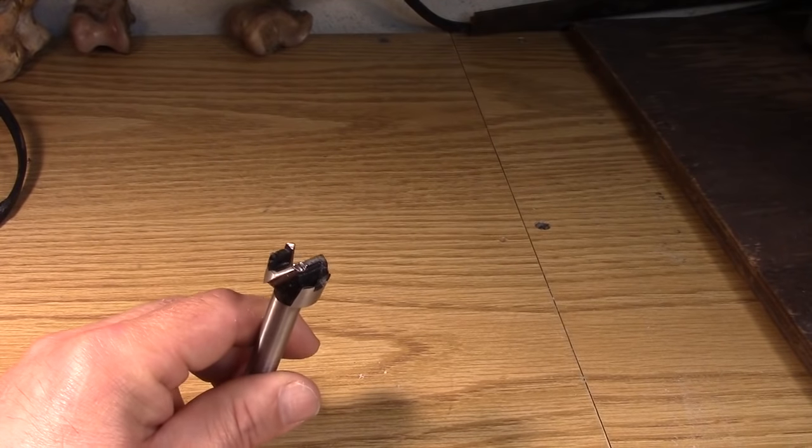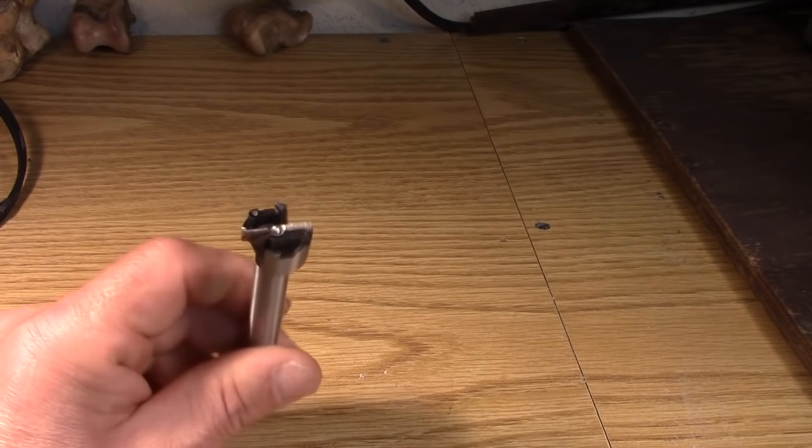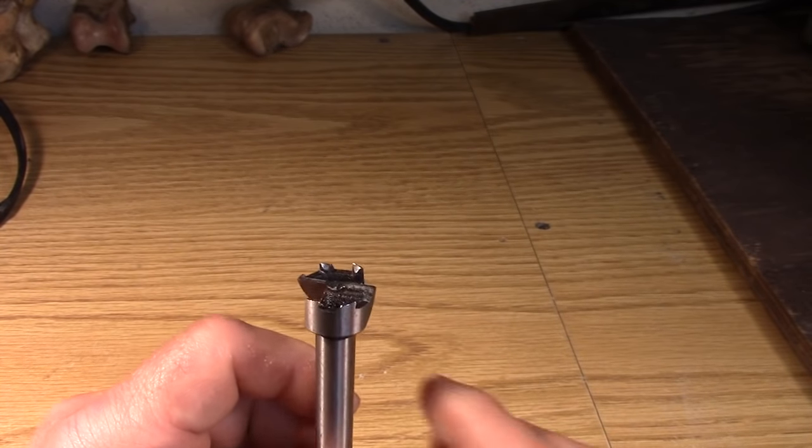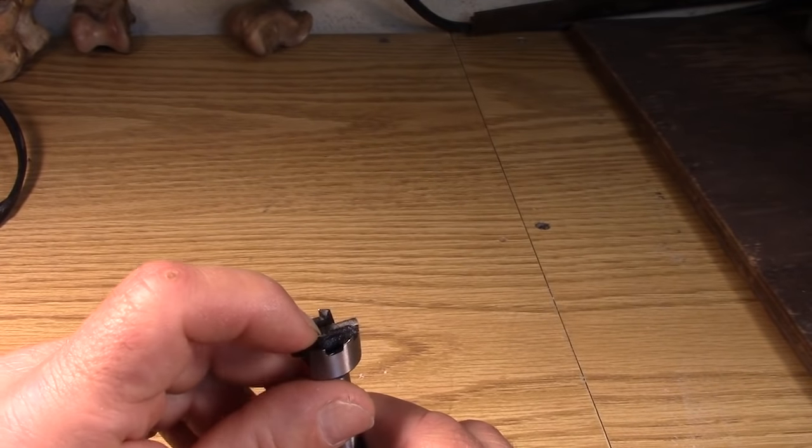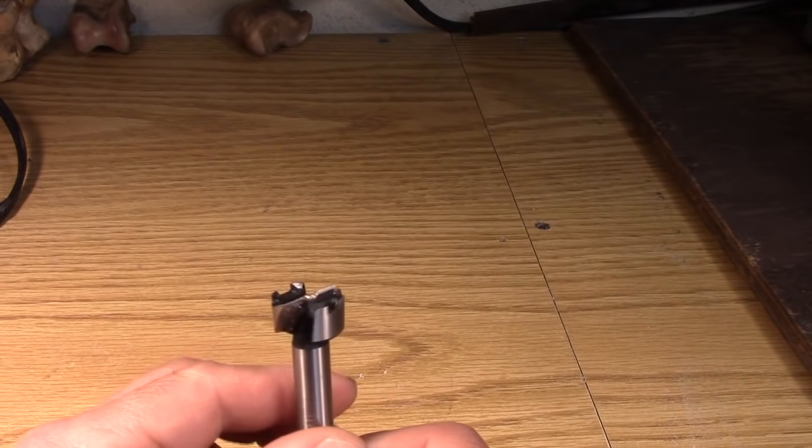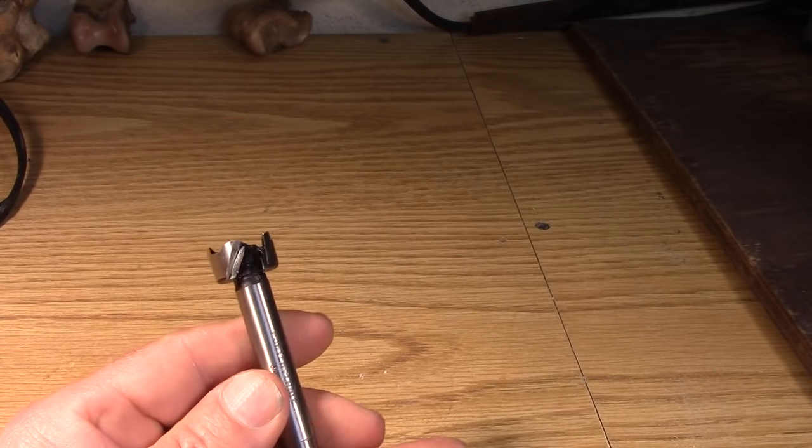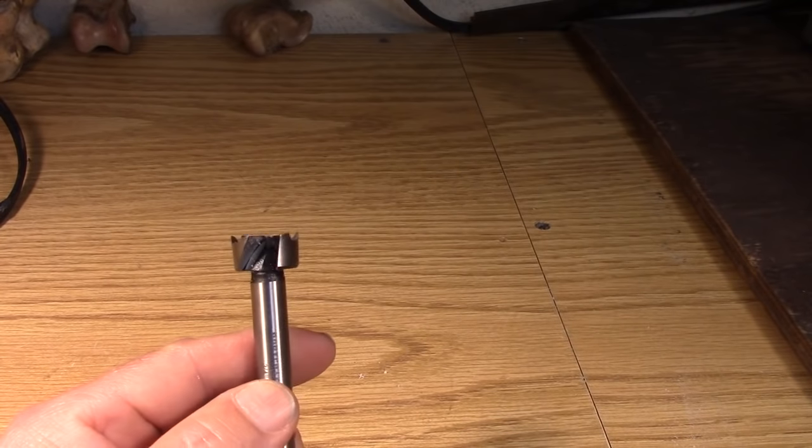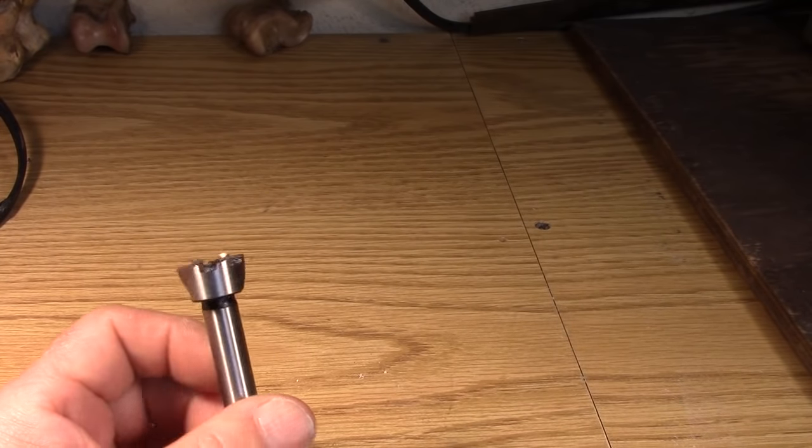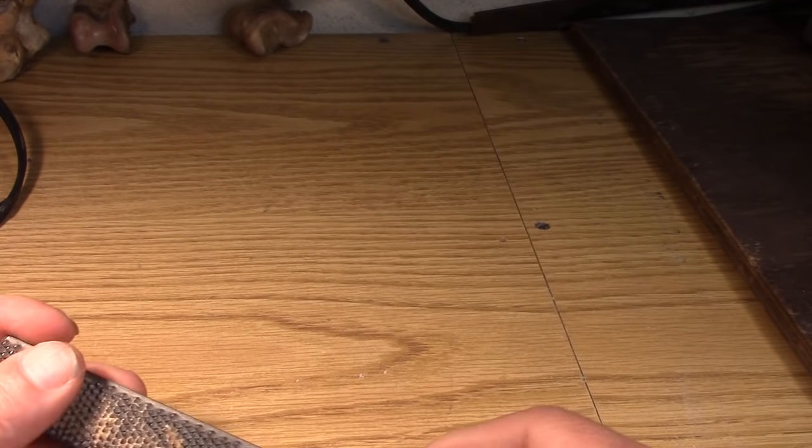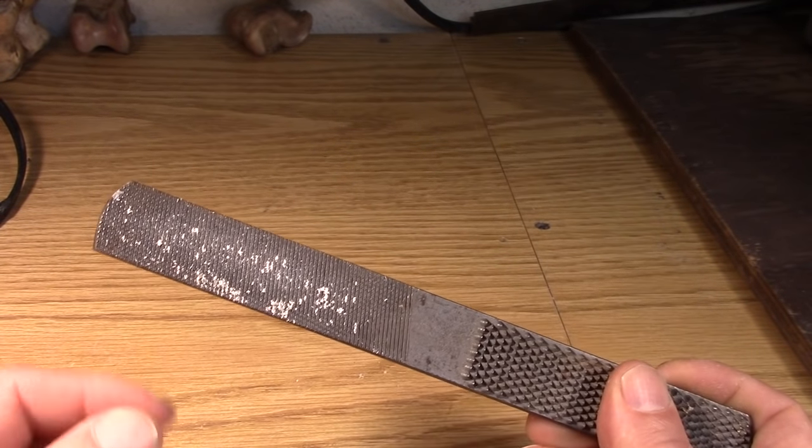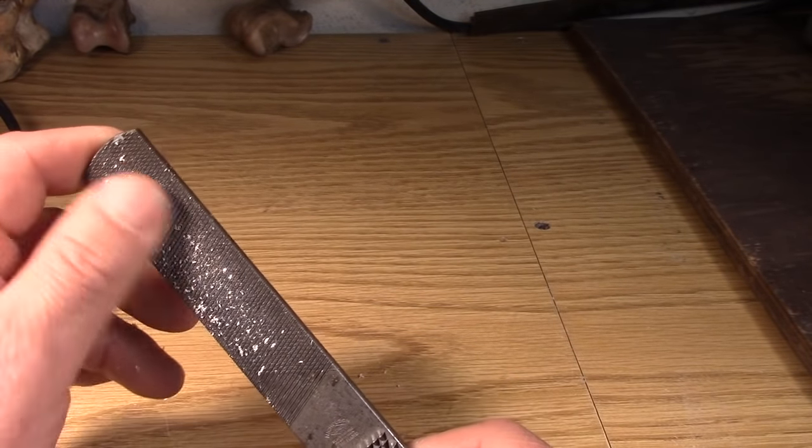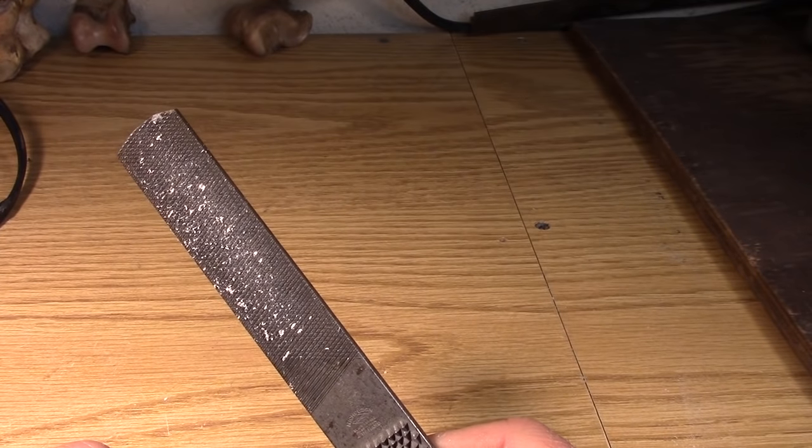You want to do that right on the centerline. Now I did use a forstner bit, and as you can see I took the little center point off, but you don't need to use something like this. You could use a flat file like this and accomplish the same thing if you're real careful.